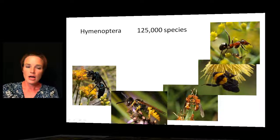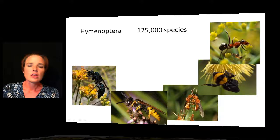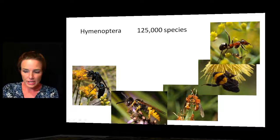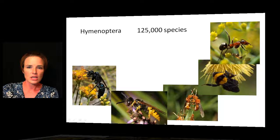Hymenoptera is what we typically think of as the stinging insects — wasps, ants, and bees. These insects have a special stinging organ located on the posterior end. Many of them are highly social insects. If you think about an ant colony, there are various social roles within it that those insects are playing.